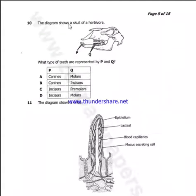Question 10 says: the diagram shows a skull of a herbivore. What type of teeth are represented by P and Q? Now P, you know that the teeth found in front here, they are what we call the incisors. And the first two teeth here, they are what we call the premolars. So the answer there is C.